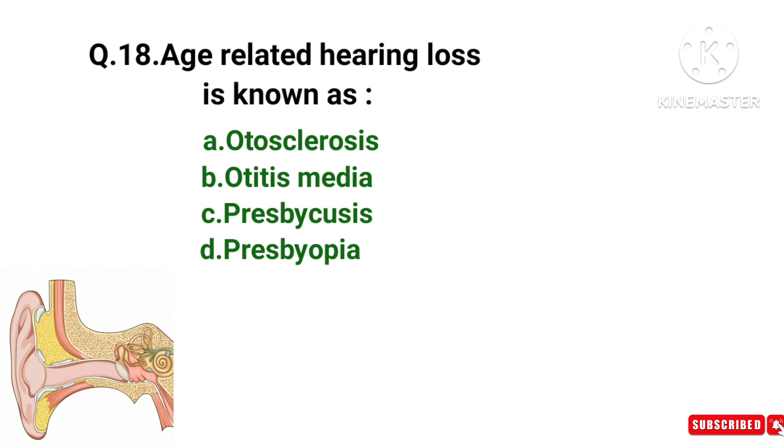Age-related hearing loss is known as: otosclerosis, otitis media, presbycusis, or presbyopia. Presbycusis is a hearing loss that gradually occurs in older people. It is the most common type of sensorineural hearing loss caused by natural aging of the auditory system.